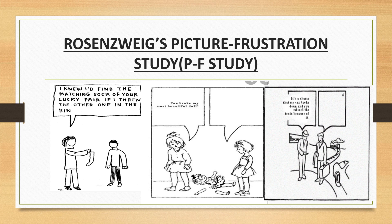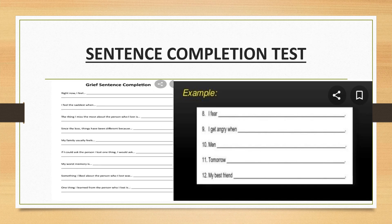Responses are also scored for whether the subject assumes blame or guilt, or justifies, minimizes, or denies the frustration. The score is based on a total of nine factors derived from the combination of three types of aggression and three directions of aggression — towards the environment, towards oneself, or turning away to evade the situation. This test has also been adapted for the Indian population by Parik.